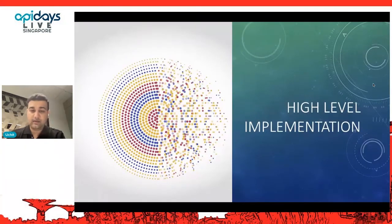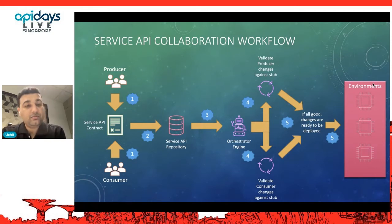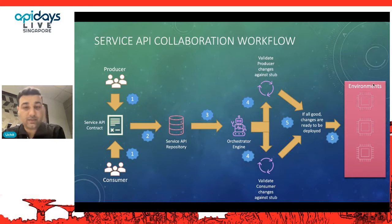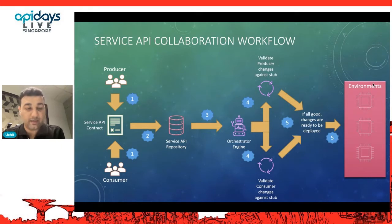At a high level, the implementation works like this: on the top of the slide you can see the producer, and at the bottom is the consumer. These are two parties coming together — talking via email, chat, or face-to-face meeting — then driving the particular contract, which we call the service API contract: the agreement between the two parties on what will be sent and received.